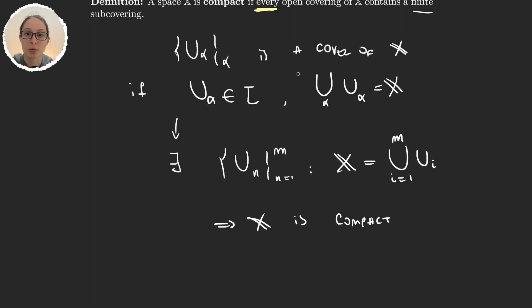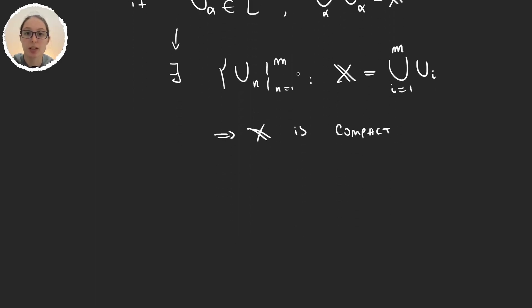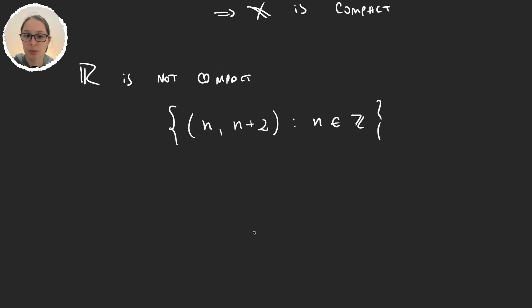For example, we can prove that the real numbers are not compact. And the proof for this is very simple because I can just take the set of intervals (n, n+2) where n is an integer, and this set is obviously a covering of the real line.